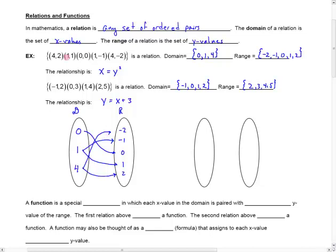And you can see that 4 is paired with negative 2 and with positive 2. And that's just another way of illustrating that particular relation. For the second relation, it would look like this.